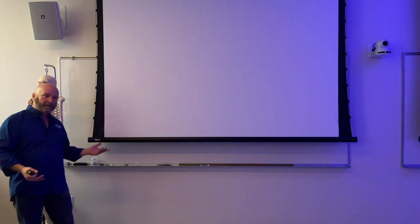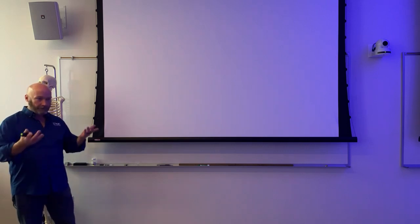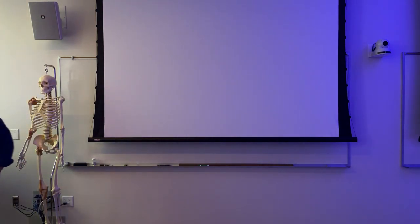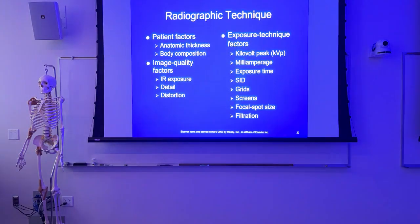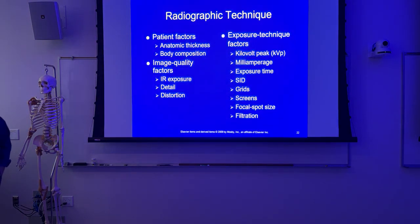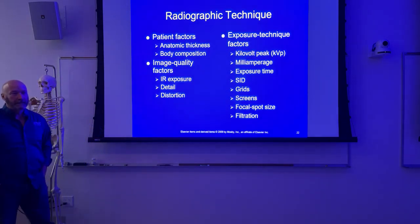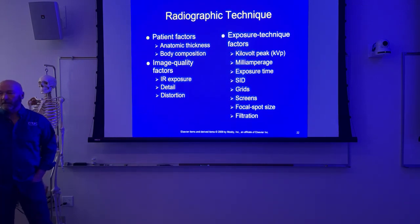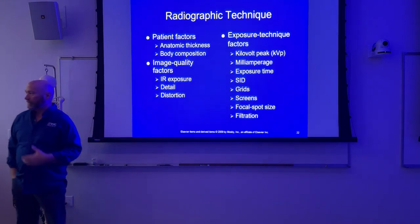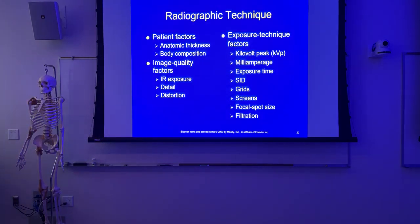You increase the distance, you lose intensity. The direct square law is the one where we reintroduce those photons and change our technique. On your tests, what you need to be looking for is mAs. If it's asking for mAs, which law do you use to get the proper mAs? Direct square law. Inverse square law is always going to be the mR - radiation dose or exposure to the patient or exposure to you.